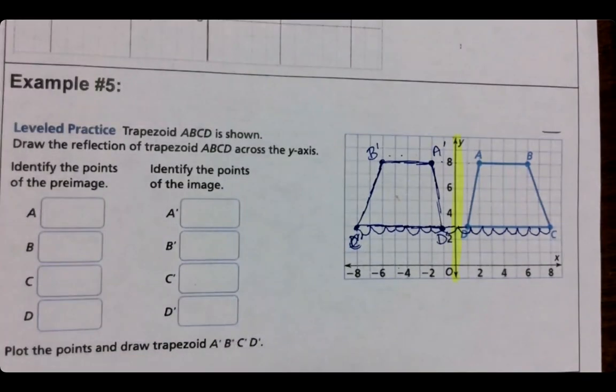So you should have had your trapezoid looking sort of like that. Again, the AD is closest to that y-axis. So it should be closest on both sides. On the reflection as well.